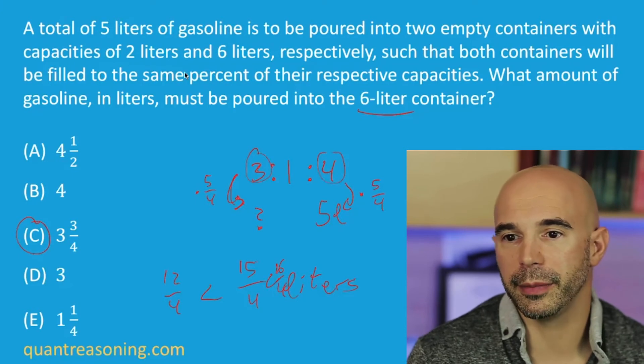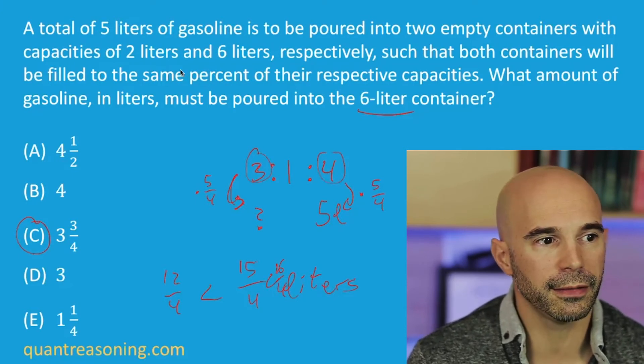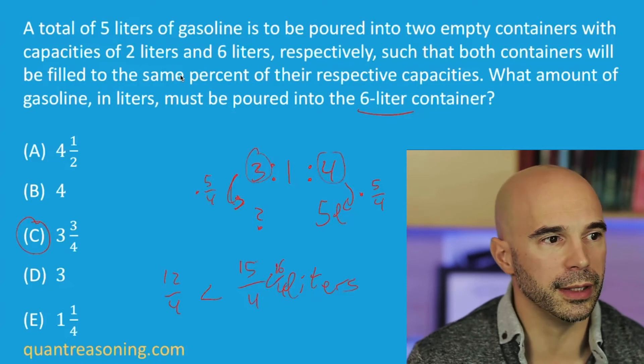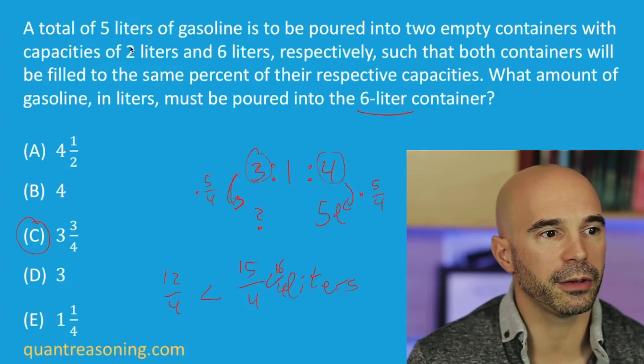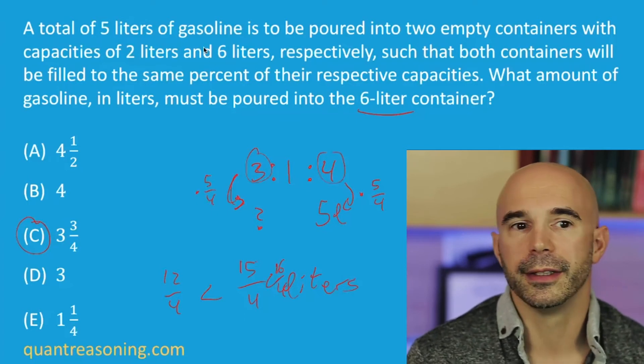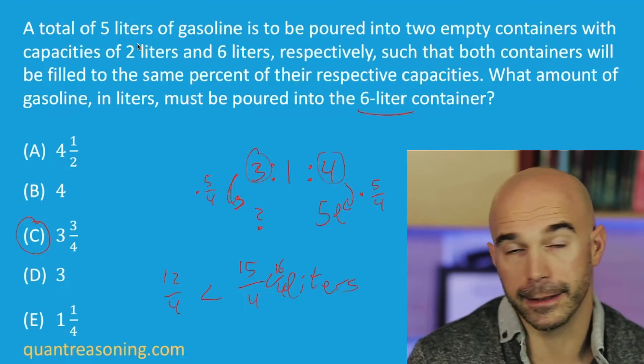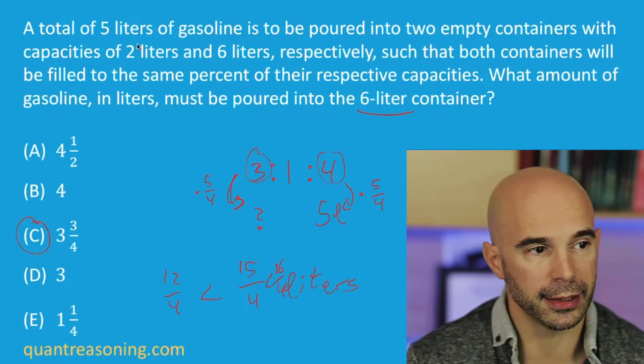If it wasn't the same percent, then all bets are off. Then maybe they're being filled to different percentages. But if they're both getting filled to the same percent, what's that percent going to be? It's whatever is five out of eight, because I have a total of five liters of gasoline and a total capacity of eight liters. So what percent is that? It's five-eighths, which is 62 and a half percent in case you were curious.